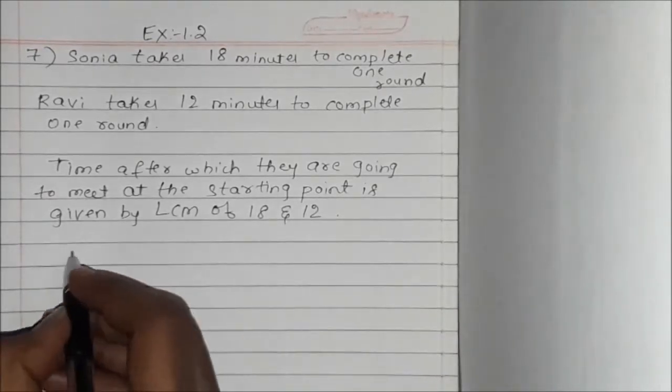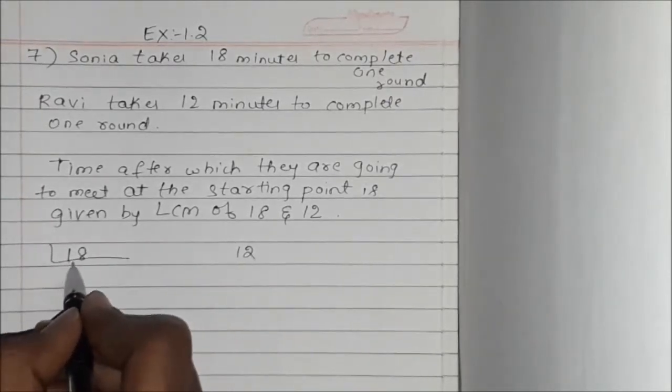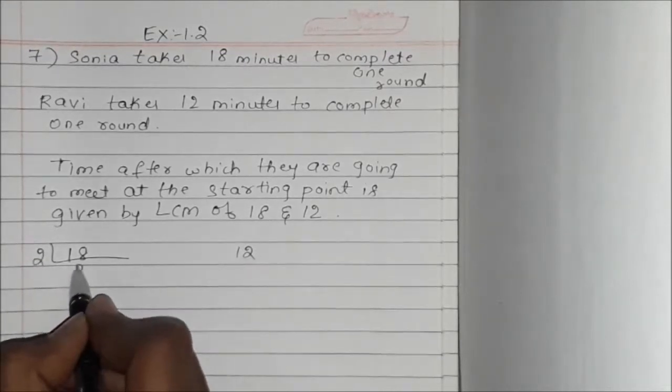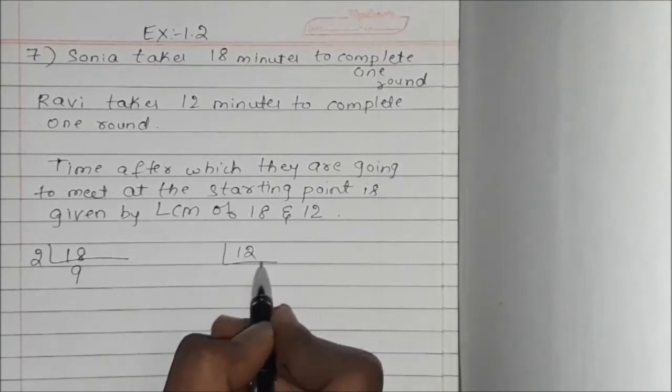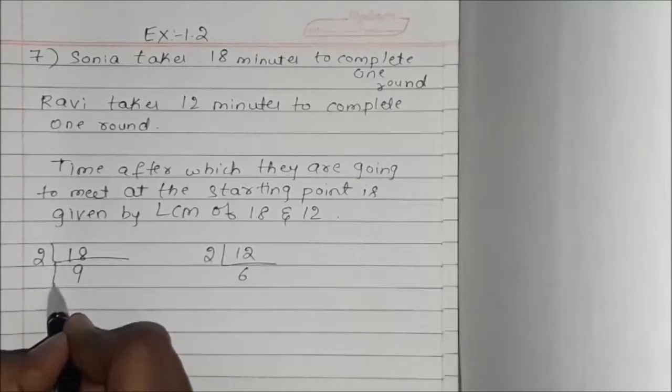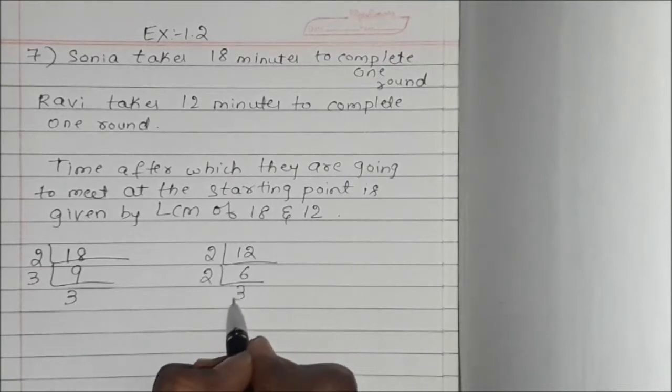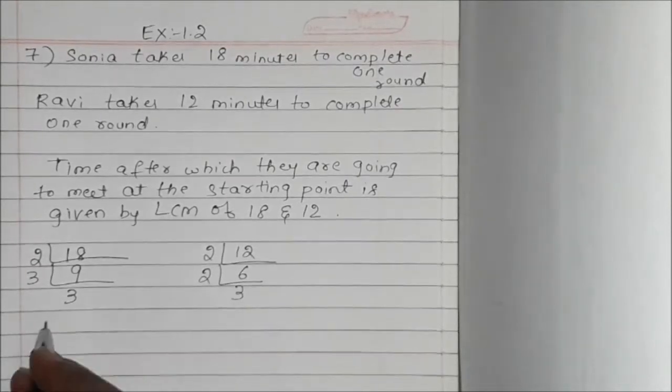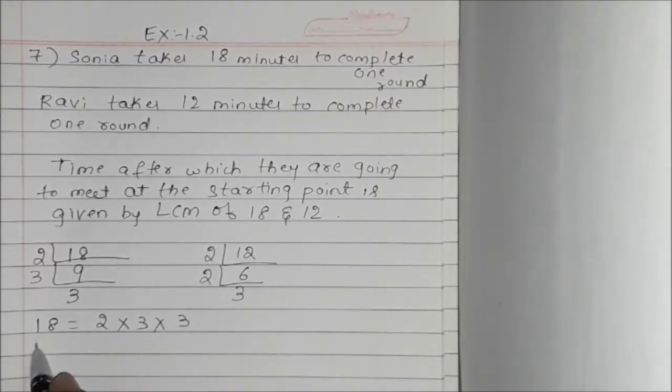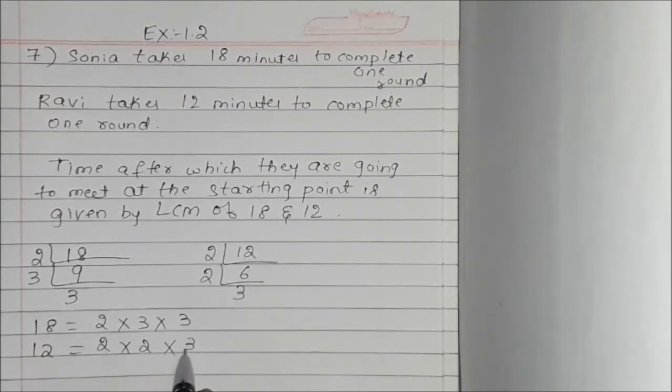So now let's find the LCM of 18 and 12. Since 18 is an even number it will go in the table of 2. Now 18 is written as 2 into 3 into 3. 12 is written as 2 into 2 into 3.